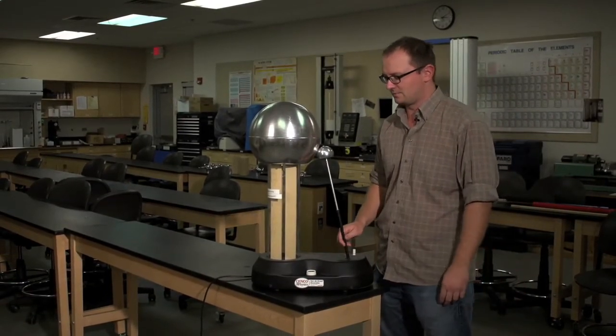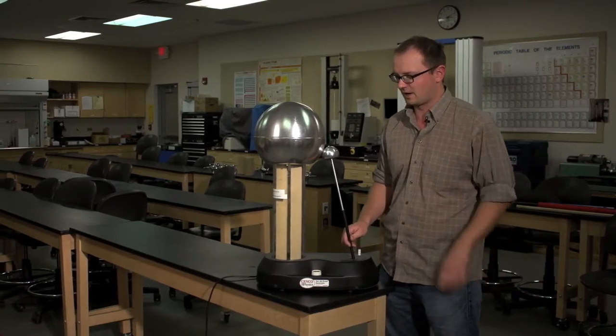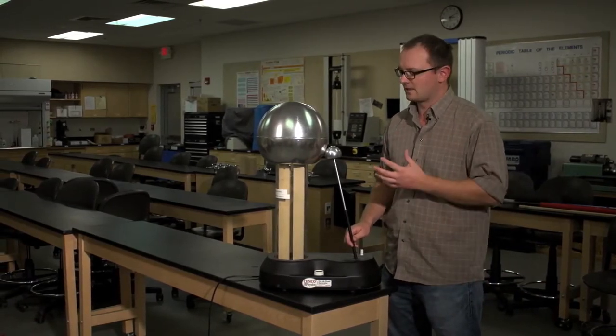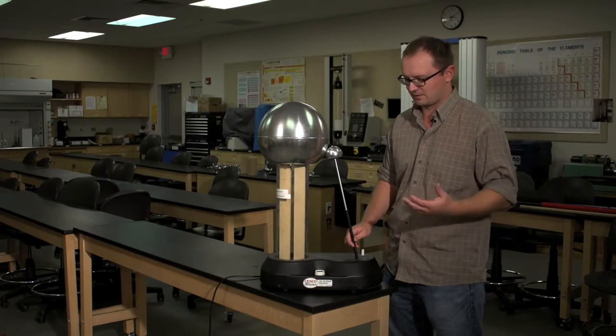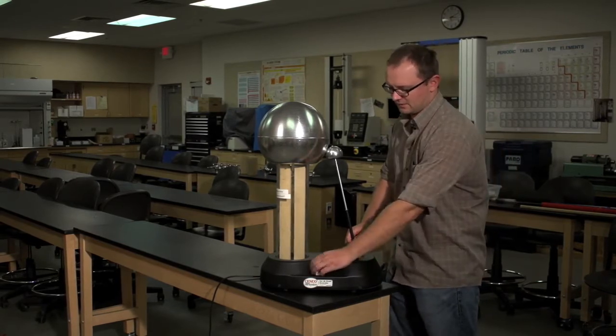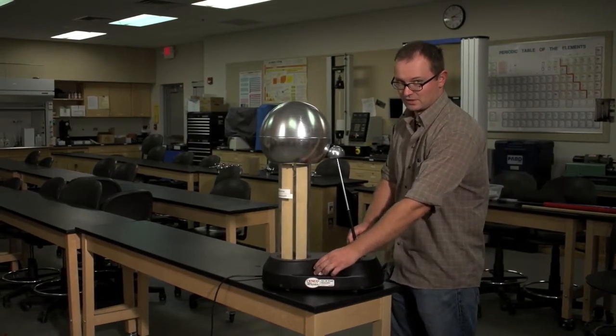First, when I approach the dome, I'm going to touch the grounding rod to the large dome. That way we discharge whatever spark was there previously. I can turn this on and off. I usually like to turn it down at the start.